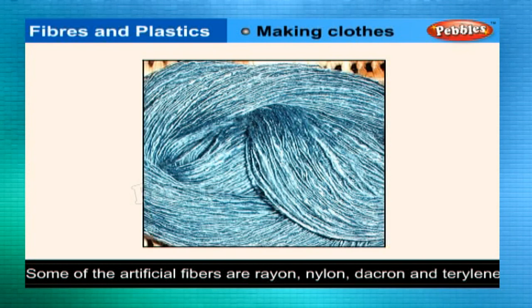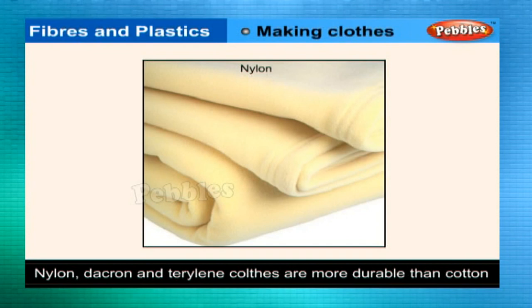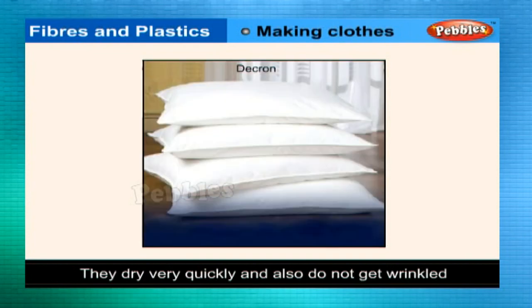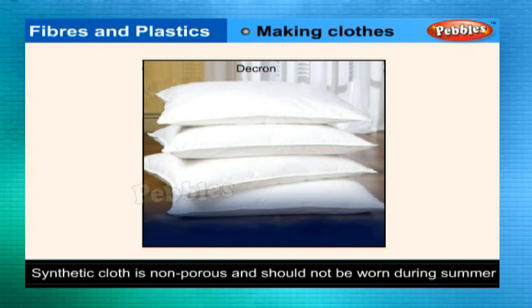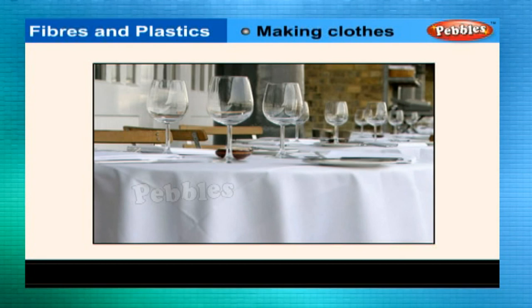Scientists have developed many kinds of artificial fibers like rayon, nylon, Dacron, and Terylene. These are called synthetic fibers. Synthetic fibers are stronger than natural fibers, so nylon, Dacron, and Terylene clothes are more durable than cotton clothes. They dry very quickly and do not get wrinkled. However, synthetic cloth is non-porous and should not be worn during summer, as it neither absorbs sweat nor allows body heat to escape.